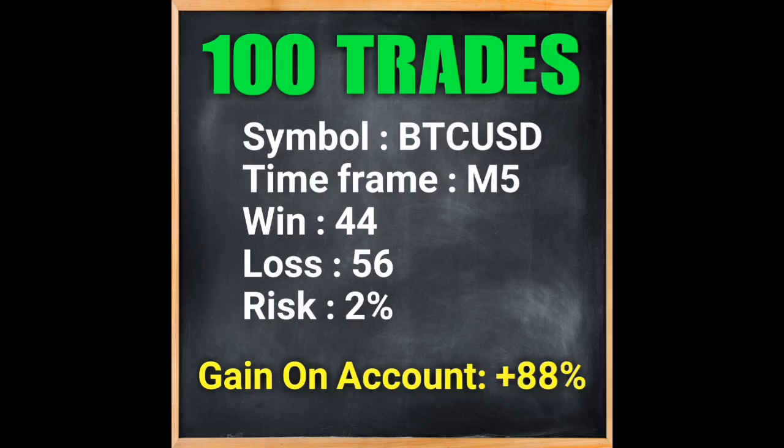The result of 100 consecutive trades in the BTCUSD symbol on the 5-minute timeframe is 44 wins and 56 losses. If we take the trading risk at 2%, and according to the strategy where take profit is bigger than stop loss, the gain on account equals 88% profit — which is a great statistic.